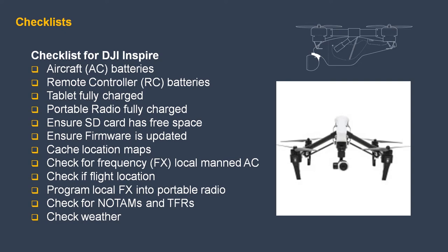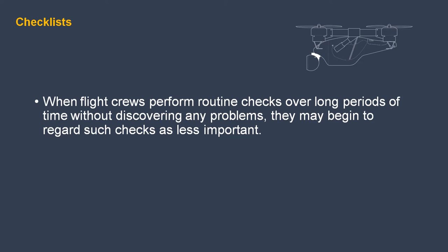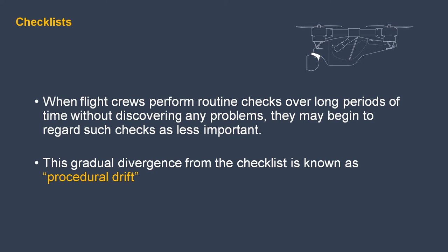Develop your pre-flight, flight, and post-flight checklist specific to each aircraft. When flight crews perform routine checks over long periods of time without discovering any problems, they may begin to regard such checks as less important. This gradual divergence from the checklist is known as procedural drift. Do something over and over in your routine and you're tempted to take shortcuts. There have been plane crashes because somebody skipped something in the checklist.